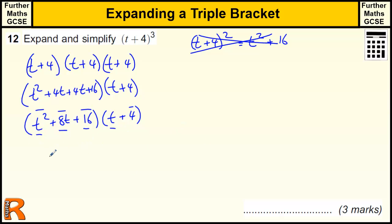So we've got t squared times t which is t cubed, 8t times t which is 8t squared, 16 times t which is 16t. And then we multiply them all again by the 4.